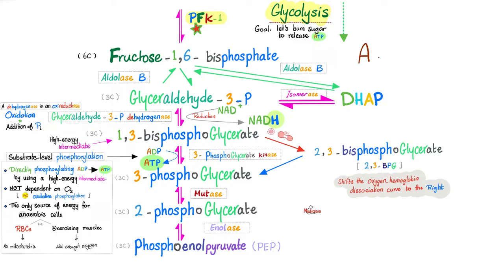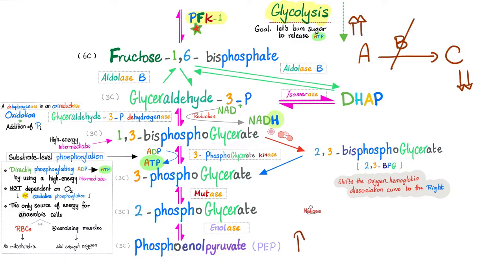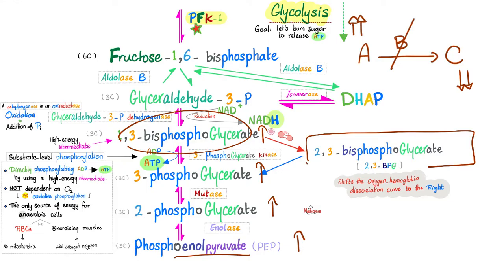Here is something important: suppose A, by using enzyme B, becomes product C. If there is a deficiency in enzyme B, anything before it will accumulate and go up, and anything after it will not happen at all — it will decrease. Similarly, if there is a problem in pyruvate kinase, everything before it will go up. You'll get elevated levels of phosphoenolpyruvate, increased levels of 2-phosphoglycerate, and so on — until you end up with elevated 2,3-BPG.